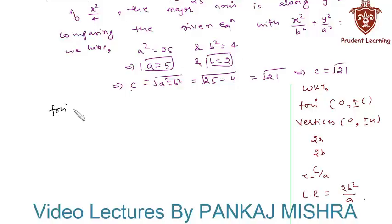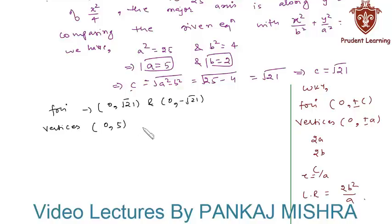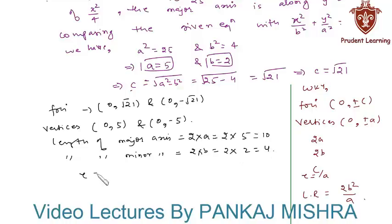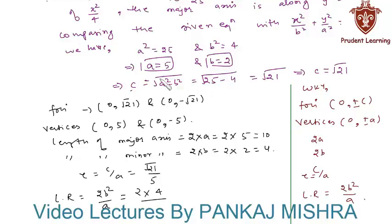The foci are at (0, √21) and (0, −√21). Vertices are at (0, 5) and (0, −5). Length of major axis = 2 × 5 = 10, length of minor axis = 2 × 2 = 4, eccentricity = √21 / 5, and length of latus rectum = 2b²/a = 2×4/5 = 8/5.